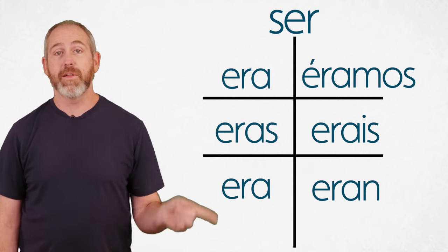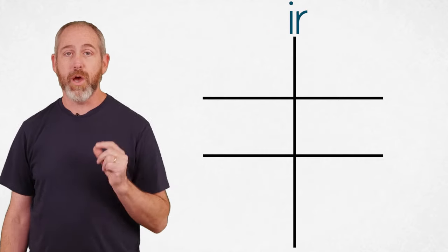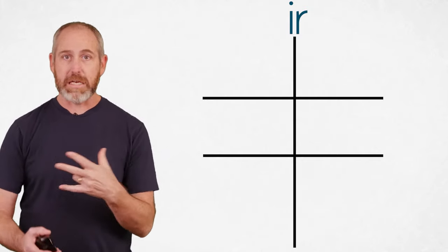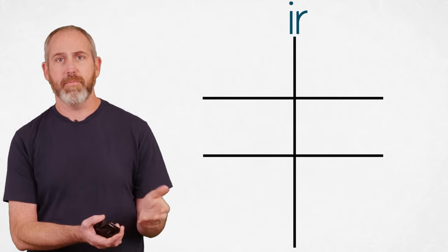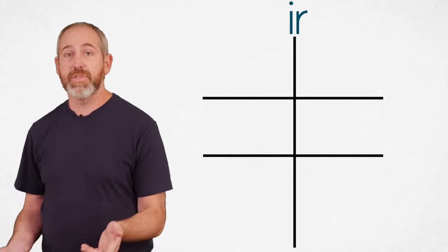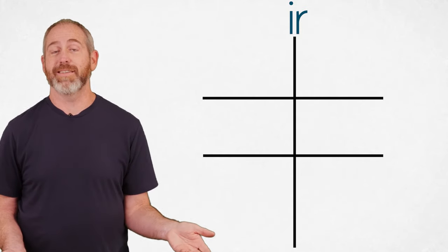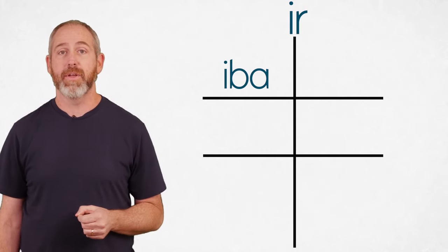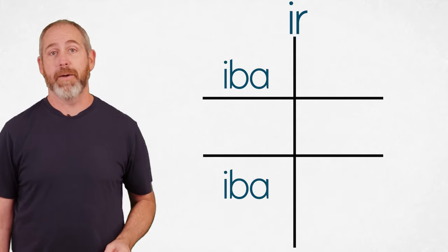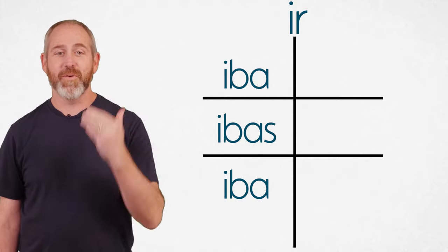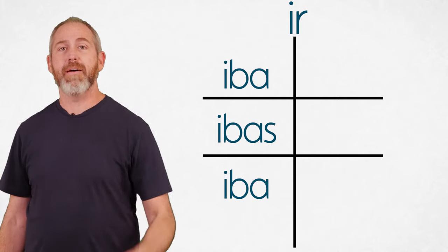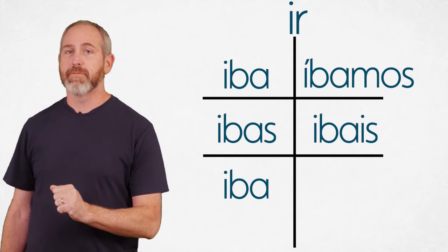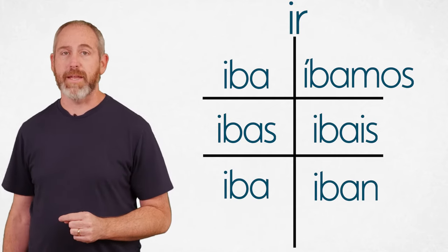Now I want to clear this one off and put ir up there. To go. This one you would think it uses ir something or it might change to fui something because we did that in the preterite, but it doesn't even use the V that we use in the present tense. This one changes to iba. Iba on the top left and also on the bottom left. And in the middle, ibas. Up on the top right, we have íbamos. And then ibais. And then iban on the bottom right.